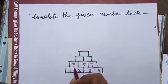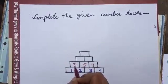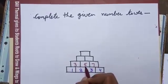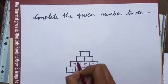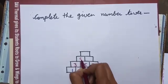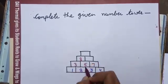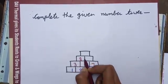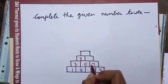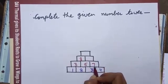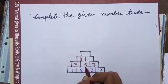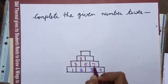Now to fill this box I will add 3 and 5. 3 plus 5, 8. To fill this box I will add 5 and 7. 5 plus 7, 12.